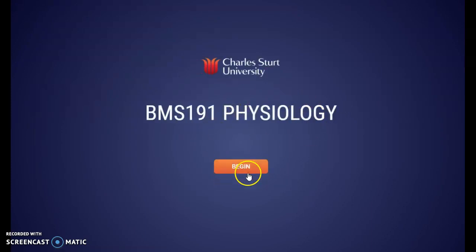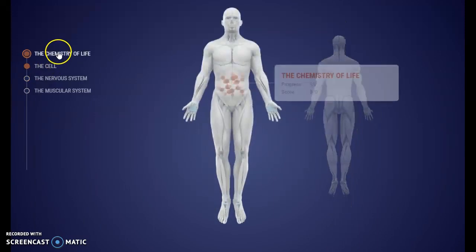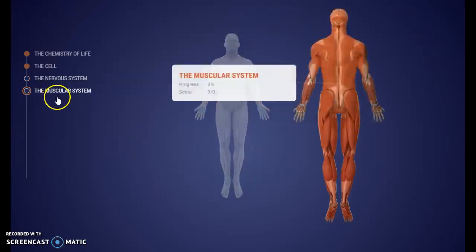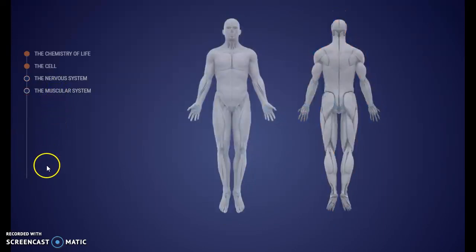Okay so let's launch the lessons. We just click on the link and it takes us to the SmartSparrow learn space which is like an index page that allows us to access each of the lessons. Here we can see there's the chemistry, the cell, the nervous system, the muscular system. As more lessons appear they'll appear down here on the left hand side.